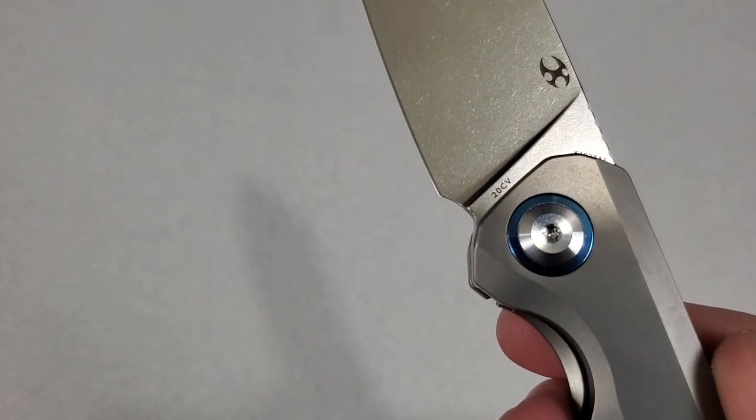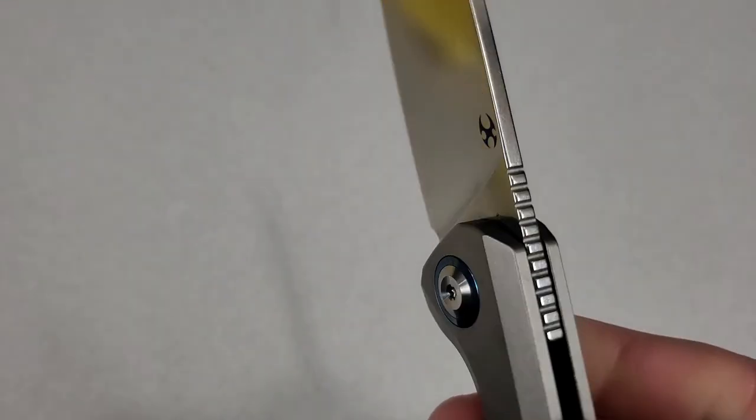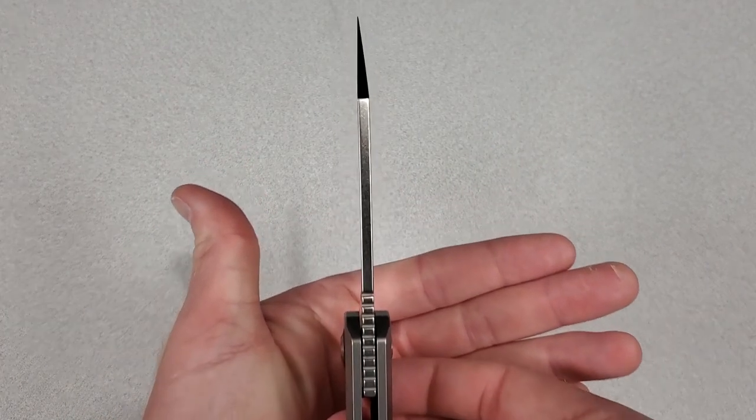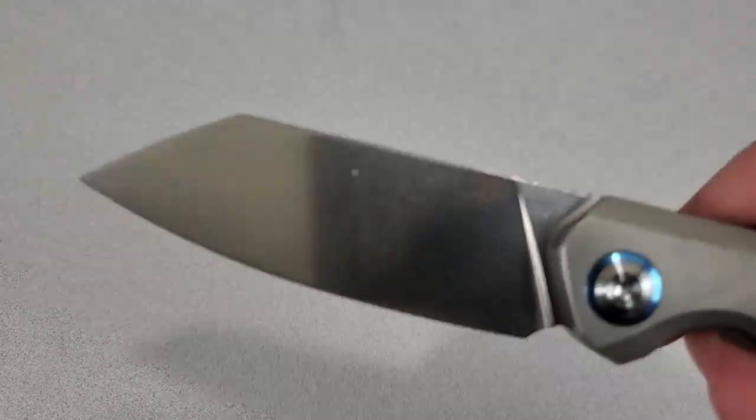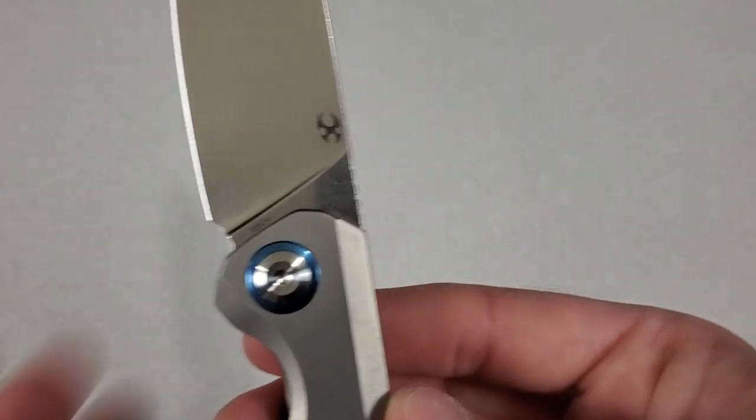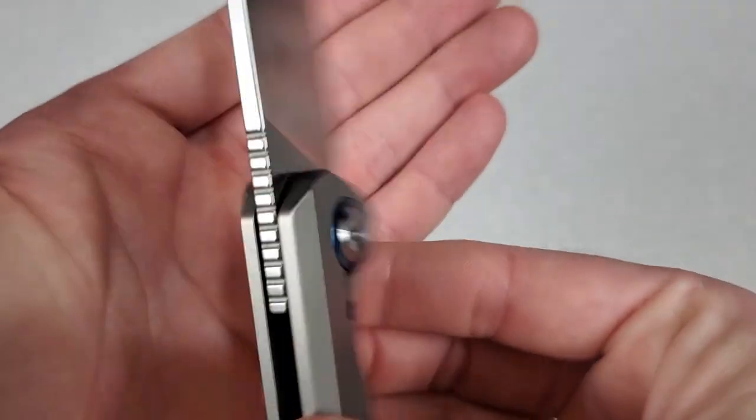The blade steel is CPM 20CV, which is a premium steel. And take a look at that blade stock. It's a very thick, sturdy blade. Very nice chunk of steel. And there's minimal markings on the blade. Besides the Concept logo, the rest are tucked away nicely.